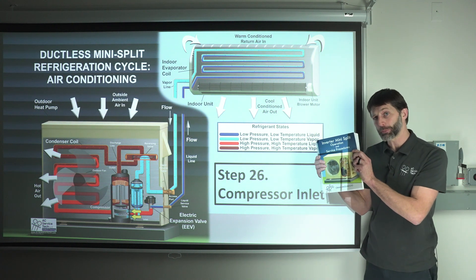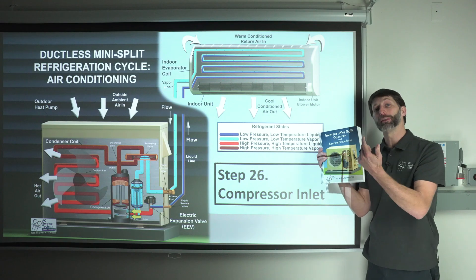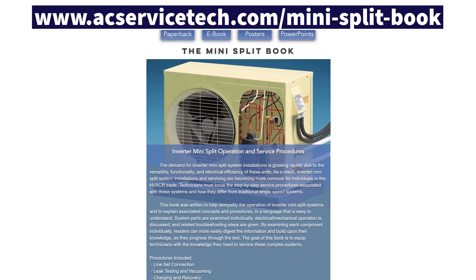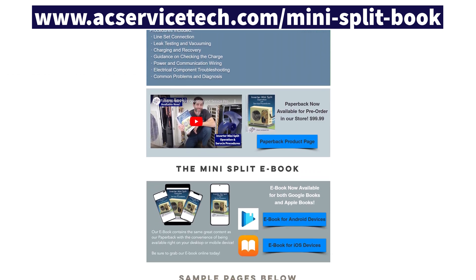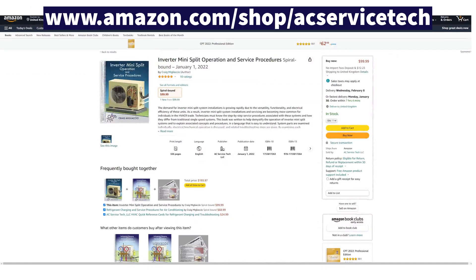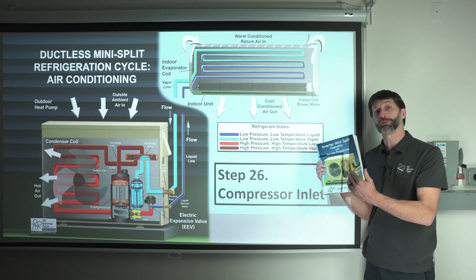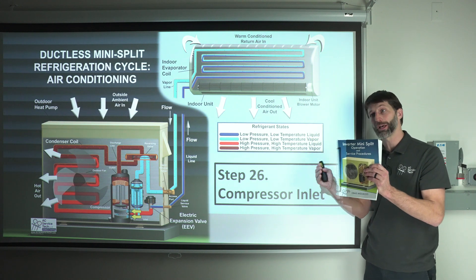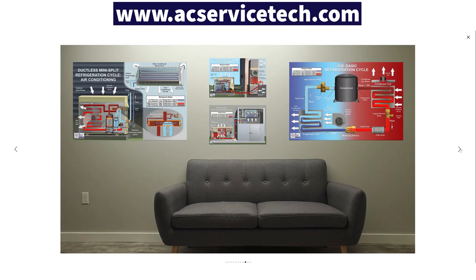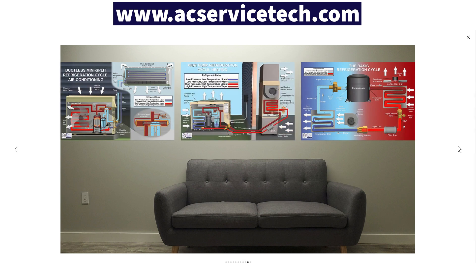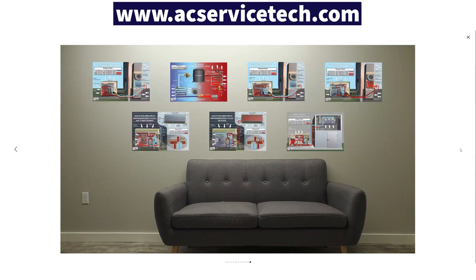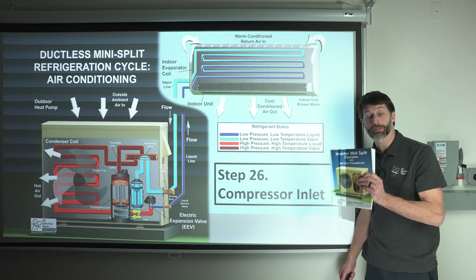If you want to learn more about how inverter mini-splits work, check out our inverter mini-split operation and service procedures book, available on Google Play, Apple Books, our website at aecservicetech.com — with international and domestic shipping — and on Amazon. Make sure to leave a review on Amazon if you've already bought the book. Also, we have these pictures available as posters you can hang in your classrooms or over a mini-split system so students can visualize the refrigerant cycle. Those are available at our website at aecservicetech.com. Hope you enjoyed it — we'll see you next time.